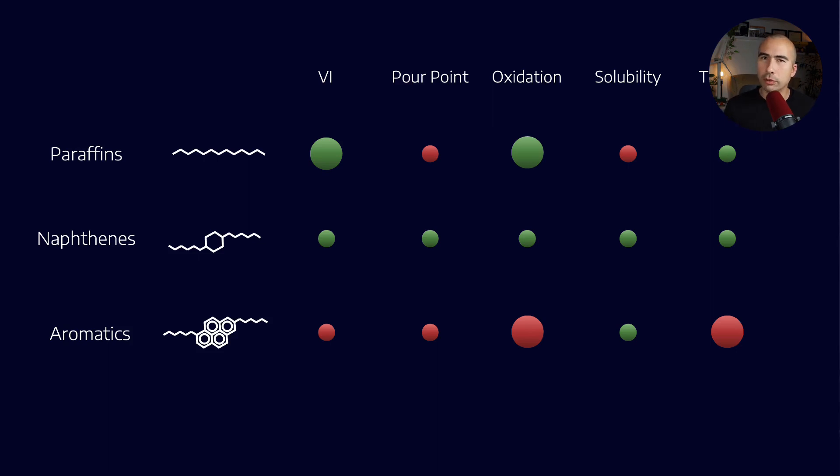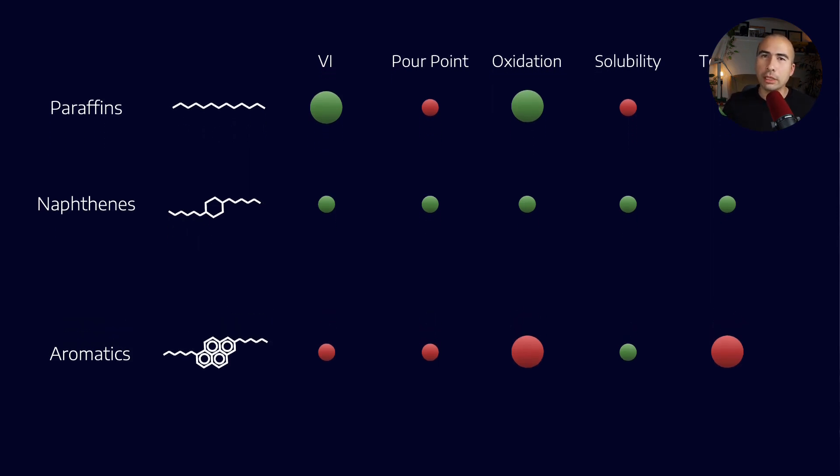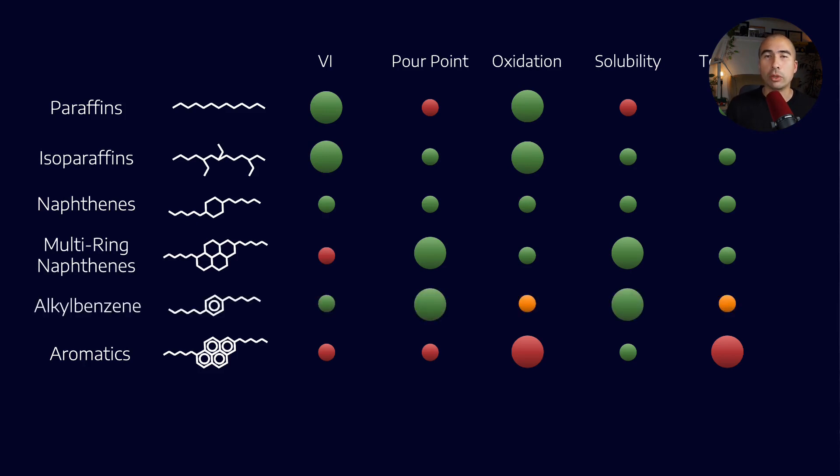Now this is an oversimplification. There are actually more families of different kinds of molecules, including the branched paraffins, also known as isoparaffins. We've got multi-ring naphthenes. We also have the alkylbenzene, or single aromatic-style rings. And then, for the sake of completeness, let's put a PAO-style molecule on as well.